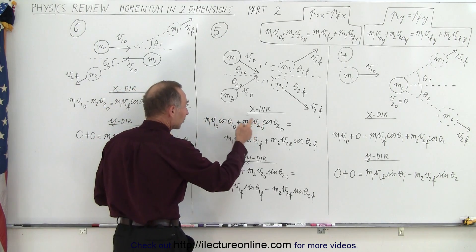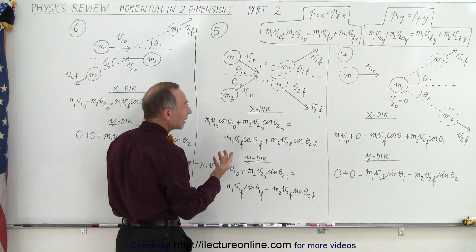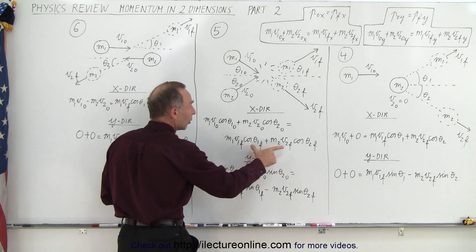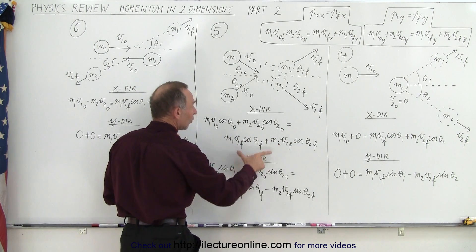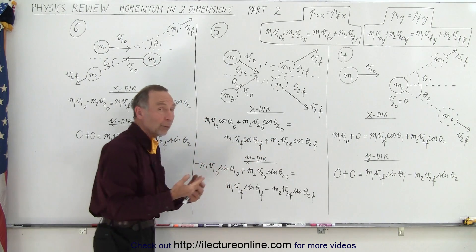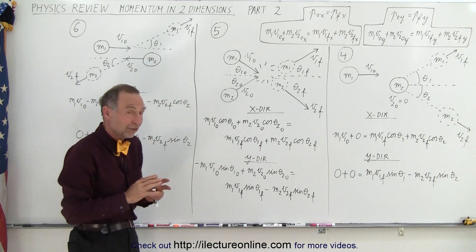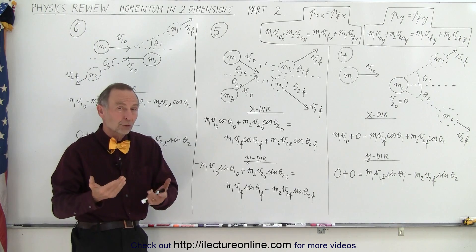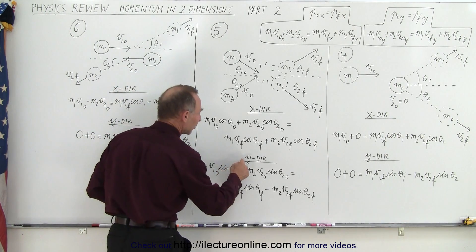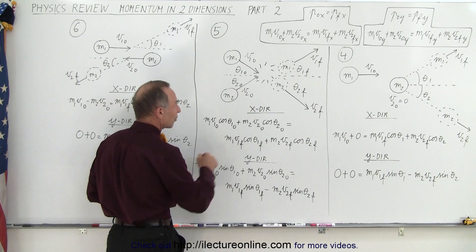So obviously six of those eight need to be given to you. Typically they give you the initial velocities, initial angles, and then two of the four final unknowns — either both angles, both velocities, or one velocity and one angle — so you can solve the other two. But again, since there are two unknowns, you will need a second equation, so now you find conservation of momentum in the y direction.